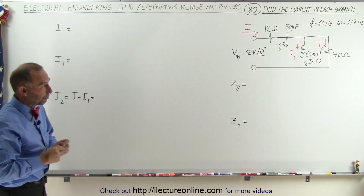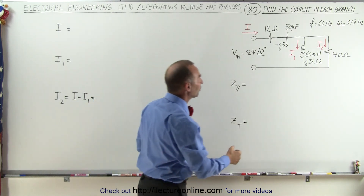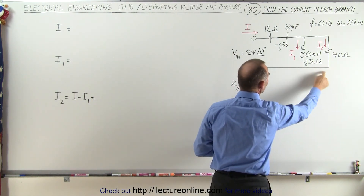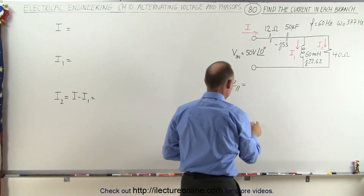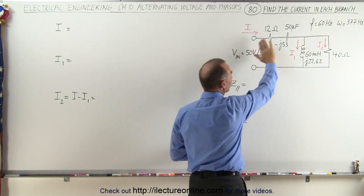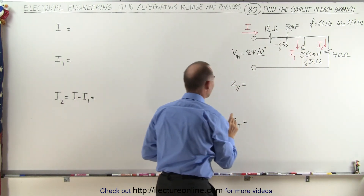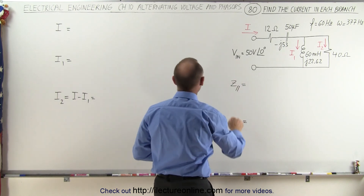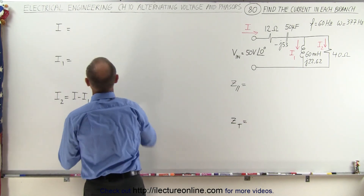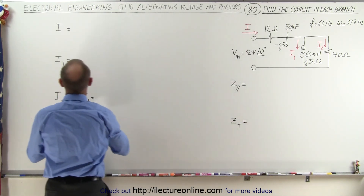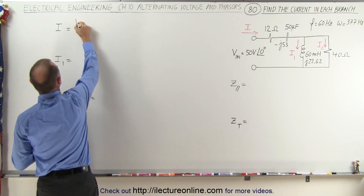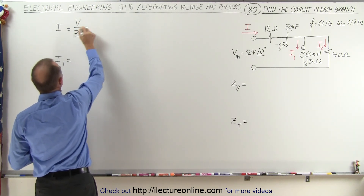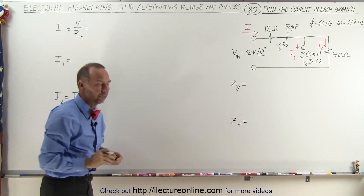But first, before we go any further, what we need to do is find the parallel impedance of these two branches right here. Then we want to find the total impedance of the circuit, so that way we can compare that to the voltage and find the total current. The current can be found by taking the input voltage divided by the total impedance.